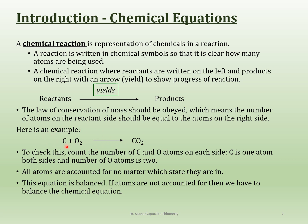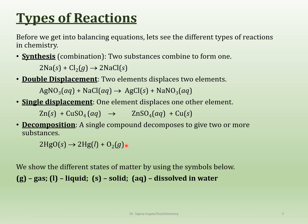Luckily for us, this equation that we have right now, we can clearly see all the atoms. We have the carbon, we have the oxygen, and here also we have one carbon and two oxygens. So everything is there, nothing is lost. That's how it's supposed to be.